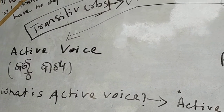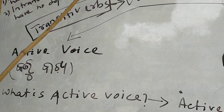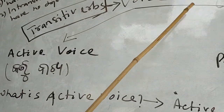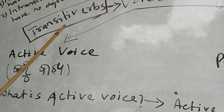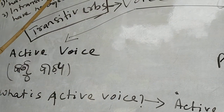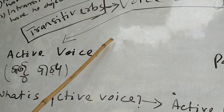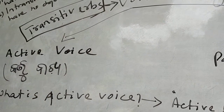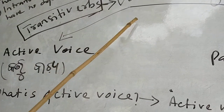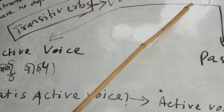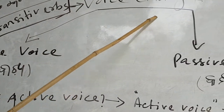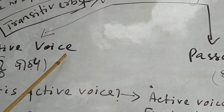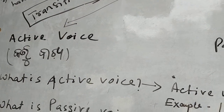Only transitive verbs can change the voice; otherwise intransitive verbs have no voice changes — no active voice or passive voice. So voice change is divided into two parts: one is active voice, another is passive voice.